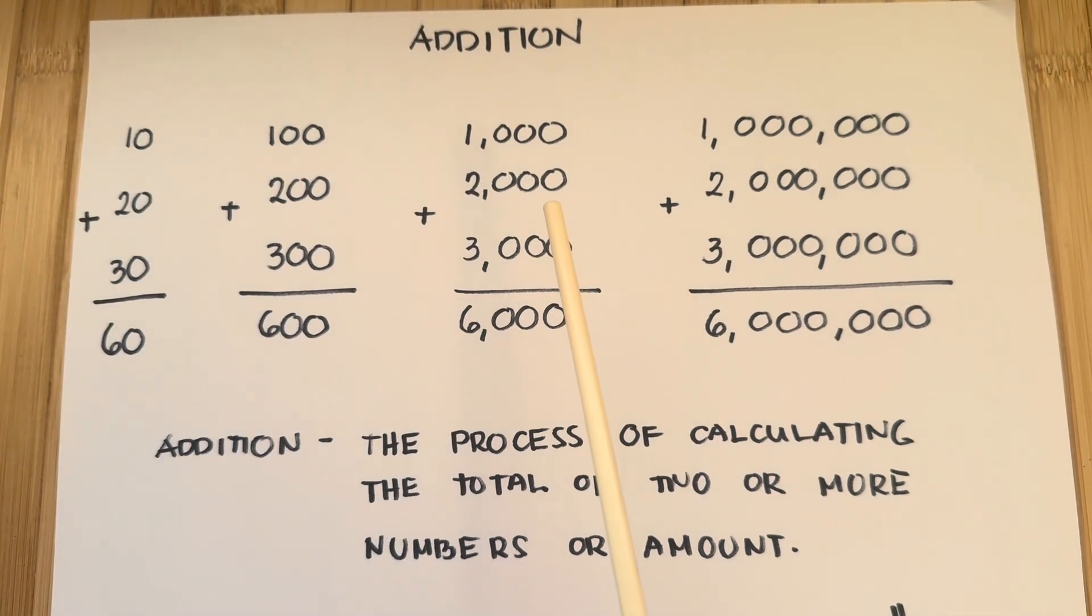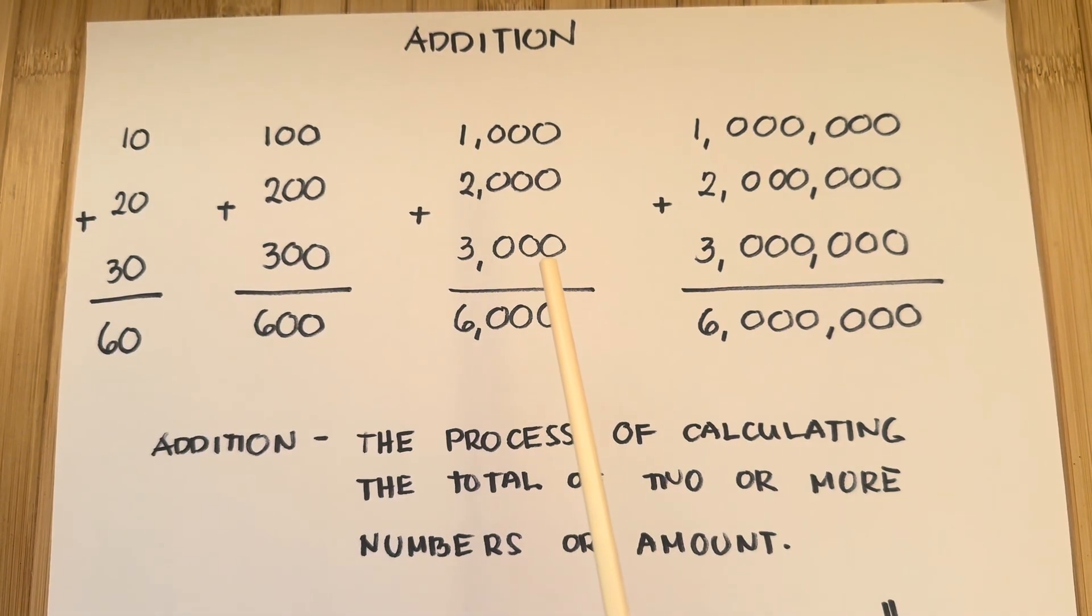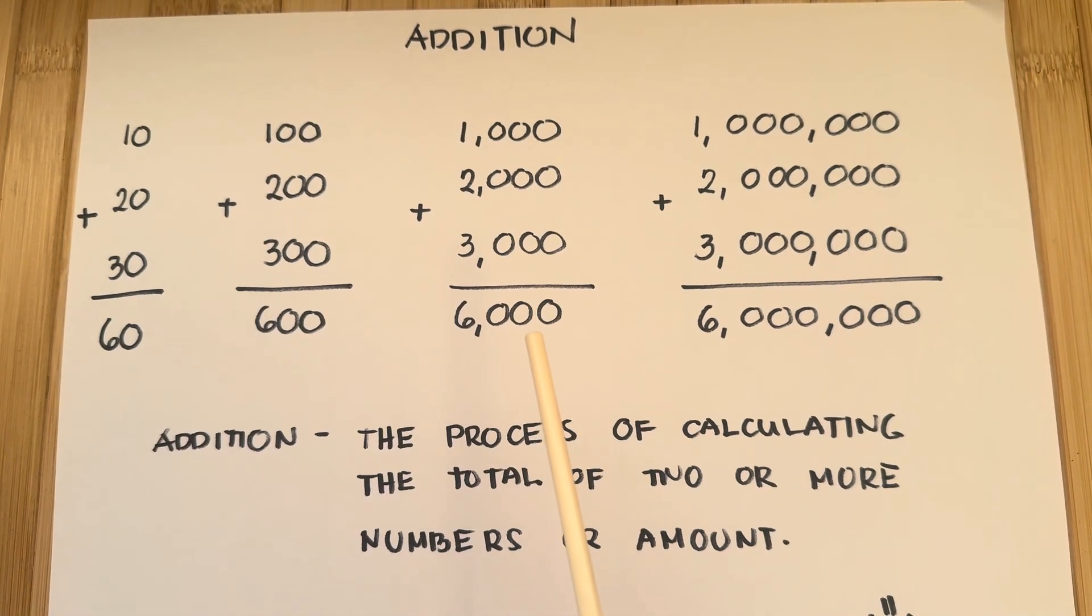1,000 plus 2,000 plus 3,000 equals 6,000.